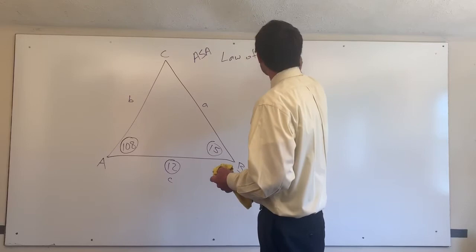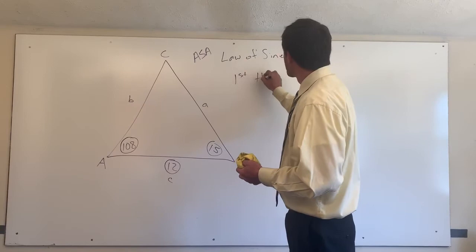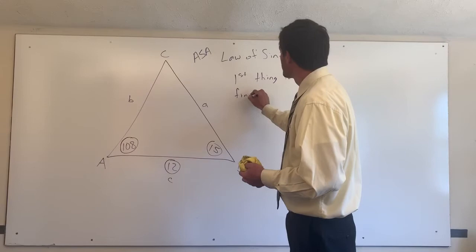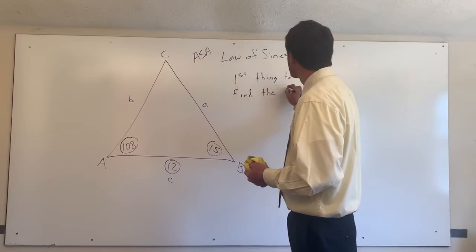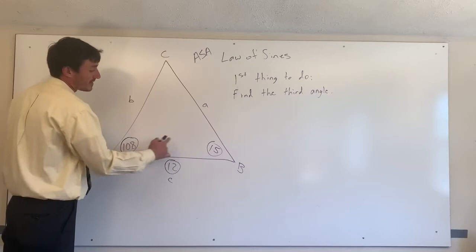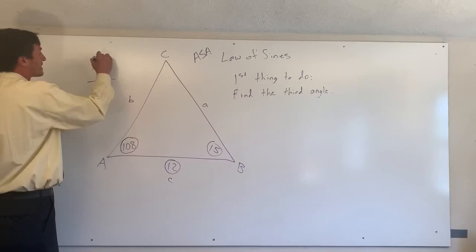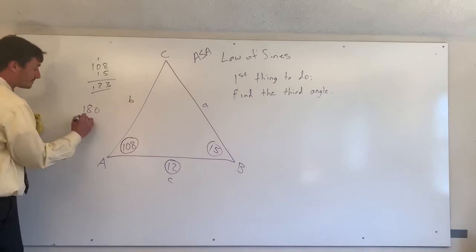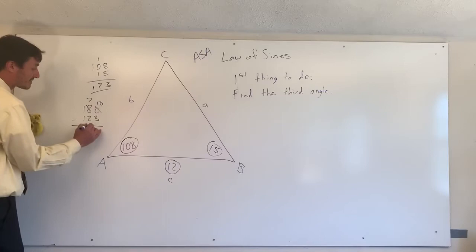Now, the first thing you need to do, find the third angle. This will make the problem a lot easier. In fact, it has to be done. So, in this case, we have 108 degrees, 15 degrees, and if we add 108 and 15, we get 123. You guys can just add it up. I encourage you guys to practice without a calculator. We have 123 degrees. We're going to take this away from 180, and we cancel the 8, make it a 7, cancel the 0, make it a 10, 10 minus 3 is 7, 7 minus 2 is 5, and 1 minus 1 is 0, so we get 57 degrees.